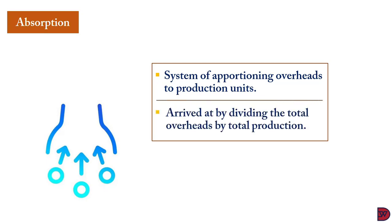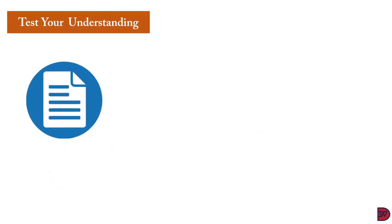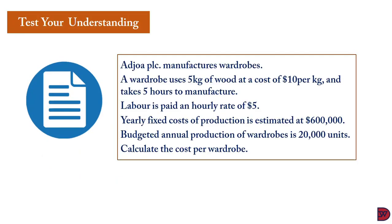Absorption is normally done by dividing the total overhead cost by the total production units, especially when there is just one product involved.